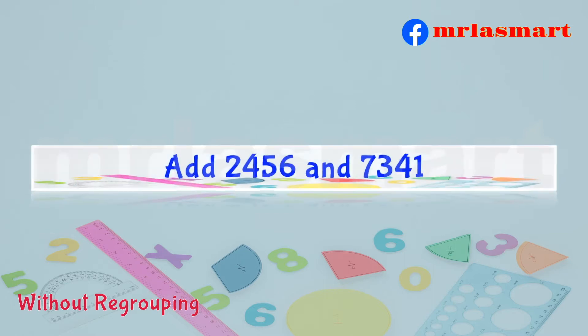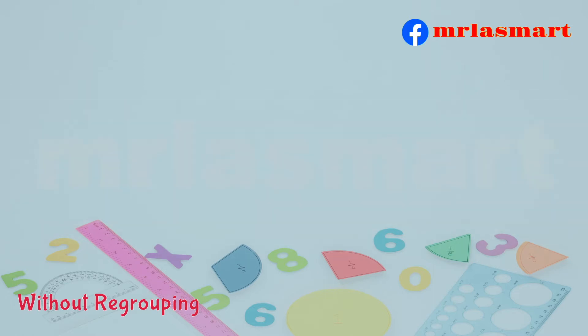Add 2,456 and 7,341. Arrange the numbers according to their place values.